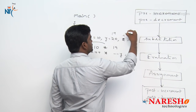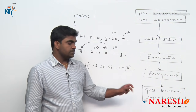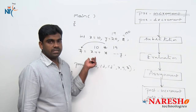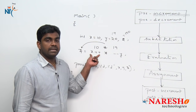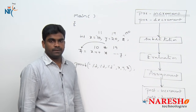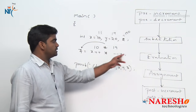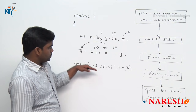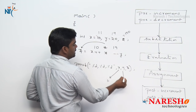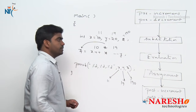Fourth step — assignment: 190 is assigned to z, so z value is 190. The last step is post-increments and post-decrements. Post-increment of x — increase x value, so x becomes 11. No post-decrement. Five steps over, evaluation complete. So x value is 11, y value is 19, z value is 190 — that's the output.